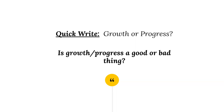What I want you to do is take the next three to four minutes and jot down about four to five sentences on your note sheet as to whether you think growth and progress is a good thing or a bad thing. Go ahead and pause this video right now and resume it when you are ready after you complete that quick write.